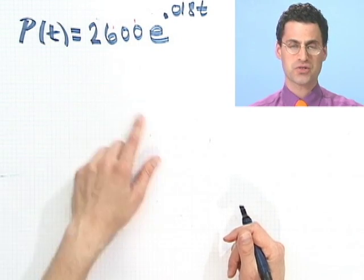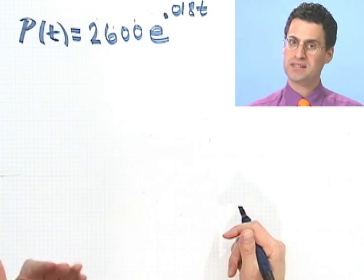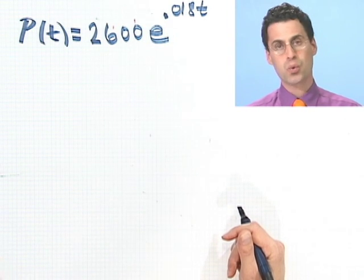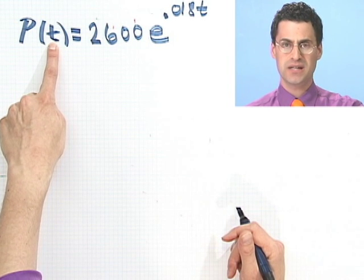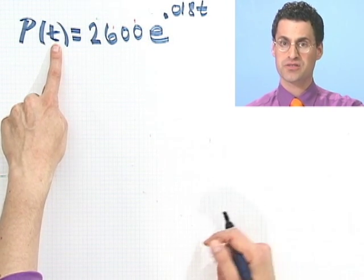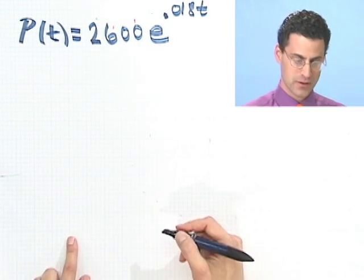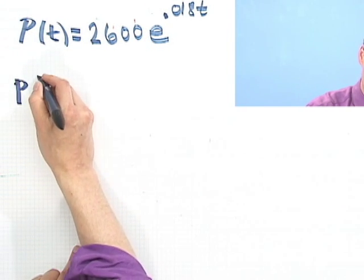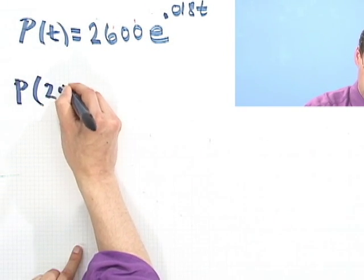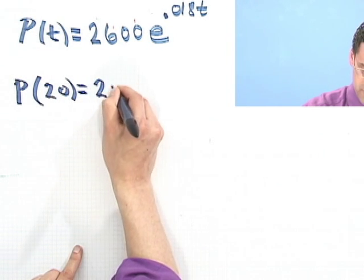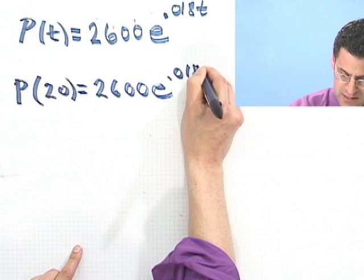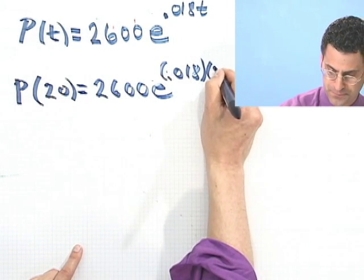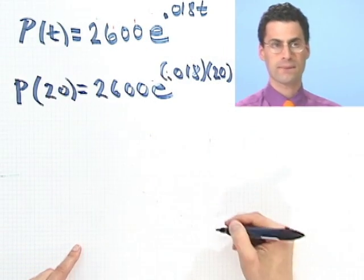So what would this say the population was in 1970? Well, in 1970, that was 20 years from 1950. So I put in t being 20 here, because this is the number of years since 1950. And then the population, which is given in millions, would be 2600 e to the 0.018 times 20.